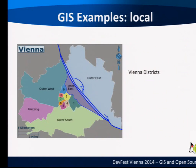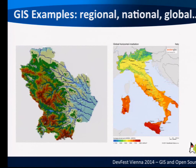GeoServer does more or less the same thing. It is an open source server written in Java. It allows users to share, process, and edit geospatial data. OpenLayers is something slightly different — it is an open source JavaScript library for displaying map data in web browsers. The difference: MapServer and GeoServer are used for publishing maps and making them available on the web, while OpenLayers helps display geospatial data in a very powerful way in the browser.